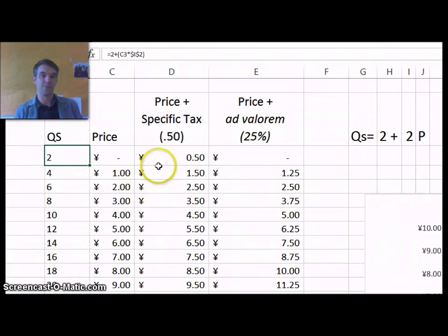Remember what we said was that with a specific tax, all that's going to change is the price that it takes for the supplier to supply the certain amount. So if before, for them to supply 4, it took 1 yuan, well now it's going to take 1 yuan 50, because the 50 cents is going to be sent to the government. So to the supplier, 1.50 actually equals just 1.